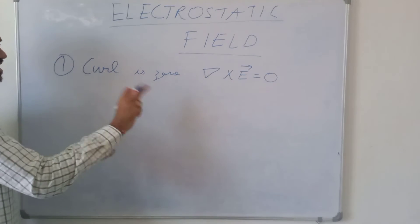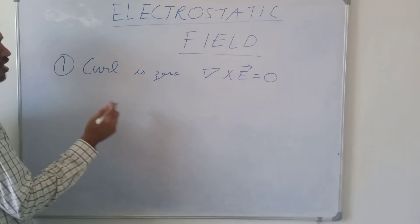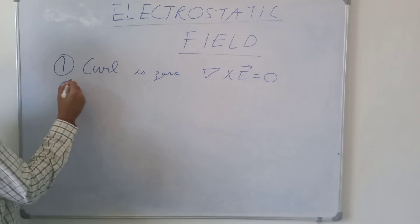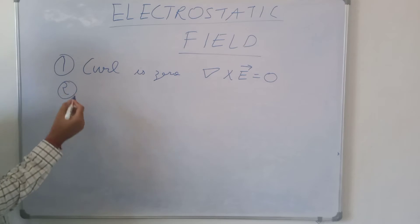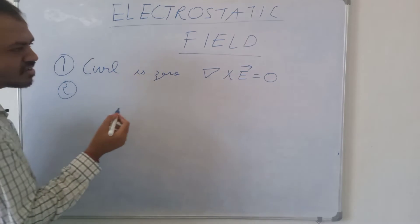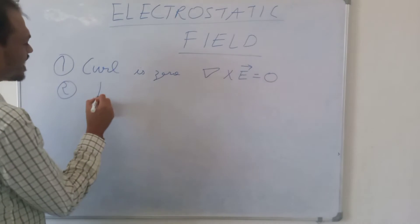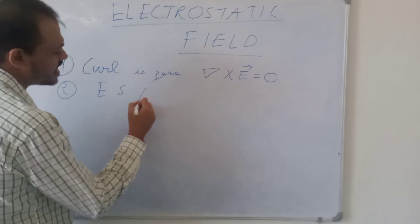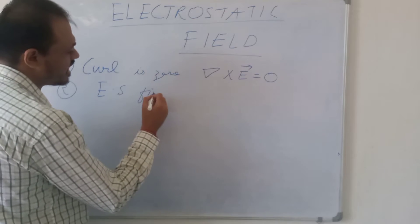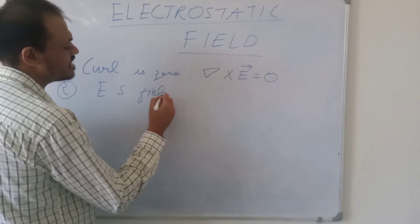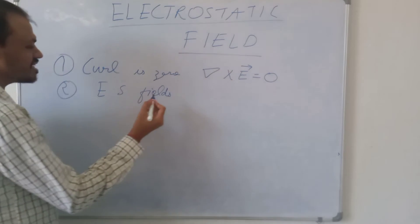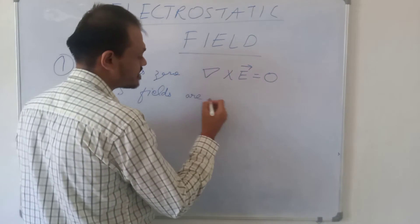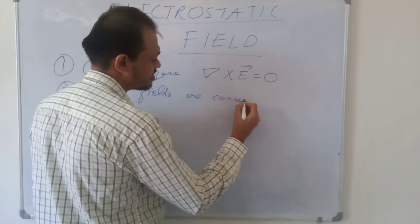If the curl is zero, it also means that the fields are conservative. If the curl of any field is zero, it means that field is conservative. So electrostatic fields are always conservative.